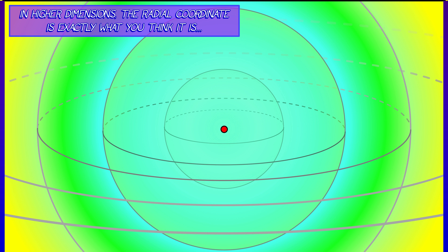So for example, the radial coordinate is exactly what you think it is. It's rho, it's the distance to the origin, and it goes from zero to infinity. But there's more.